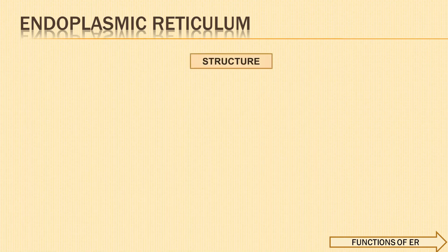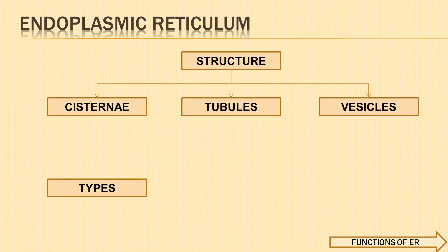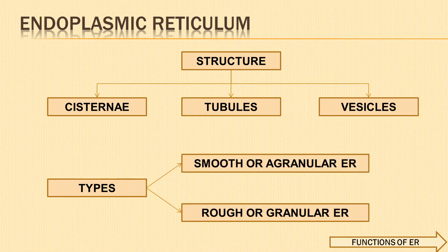Depending upon the absence or presence of ribosomes on the surface of endoplasmic reticulum, it is grouped into two types: smooth or agranular endoplasmic reticulum (SER) and rough or granular endoplasmic reticulum (RER). In smooth endoplasmic reticulum, the walls are smooth because of the absence of ribosomes on the surface of the membrane. It consists mainly of tubules and vesicles, and is generally found in adipose cells and glycogen-storing cells of the liver.